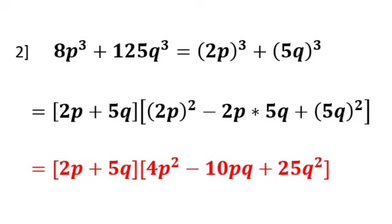Now using the formula for a³ + b³, assume a as 2p and b as 5q. The first bracket a + b: write 2p + 5q. In the second bracket: a² is (2p)², minus ab is 2p × 5q, plus b² is (5q)². So the factors of 8p³ + 125q³ are (2p + 5q)(4p² - 10pq + 25q²).